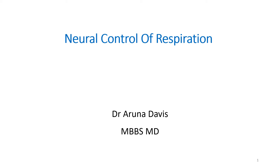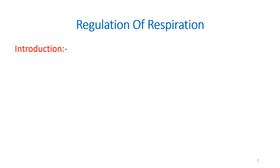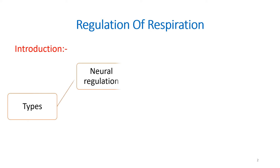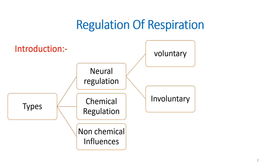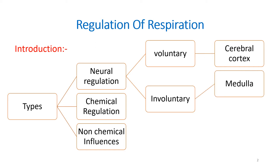In this class we will be discussing how we approach the question on neural control of respiration for exams. As in any other answer, we start with a small introduction covering the background. There are basically three types of regulation of respiration: neural regulation, chemical regulation, and non-chemical influences. There are two types of neural regulation: voluntary and involuntary. Voluntary regulation is mainly done by the cortex, and involuntary consists of the medullary respiratory centers and the pontine respiratory centers.